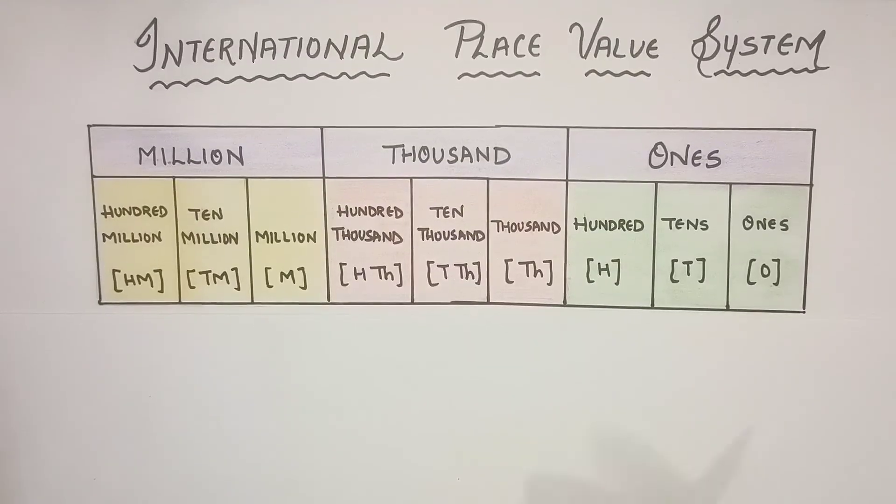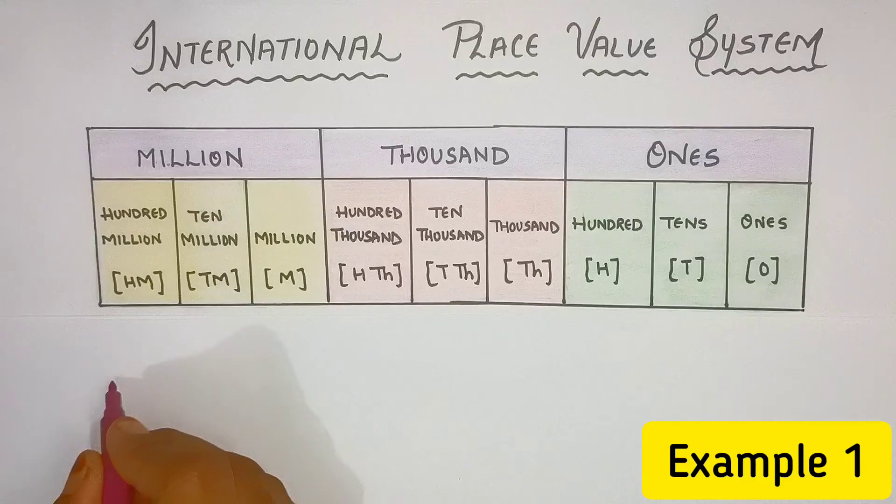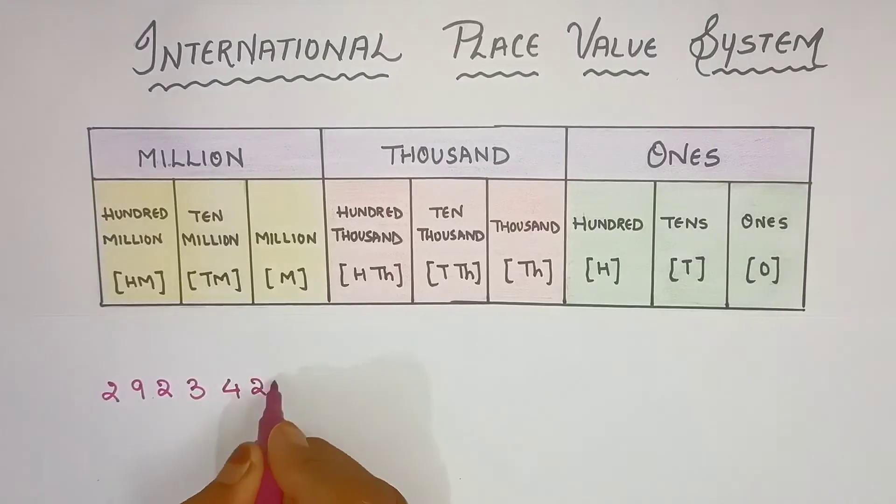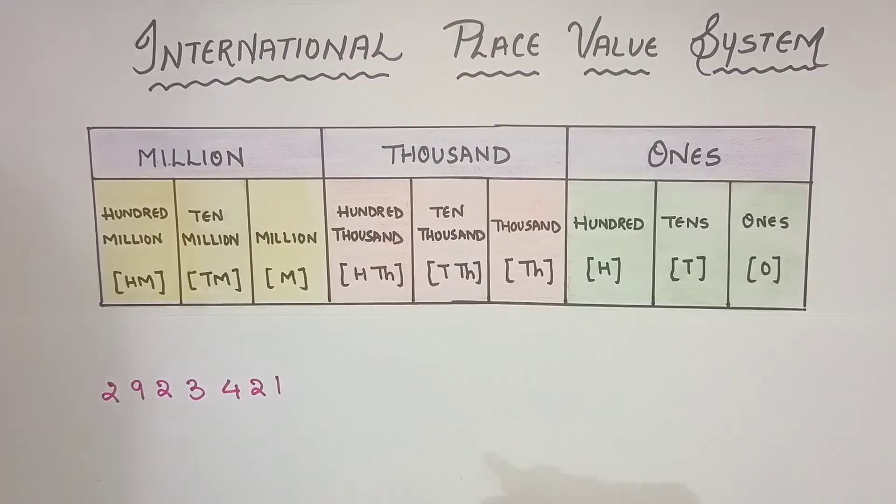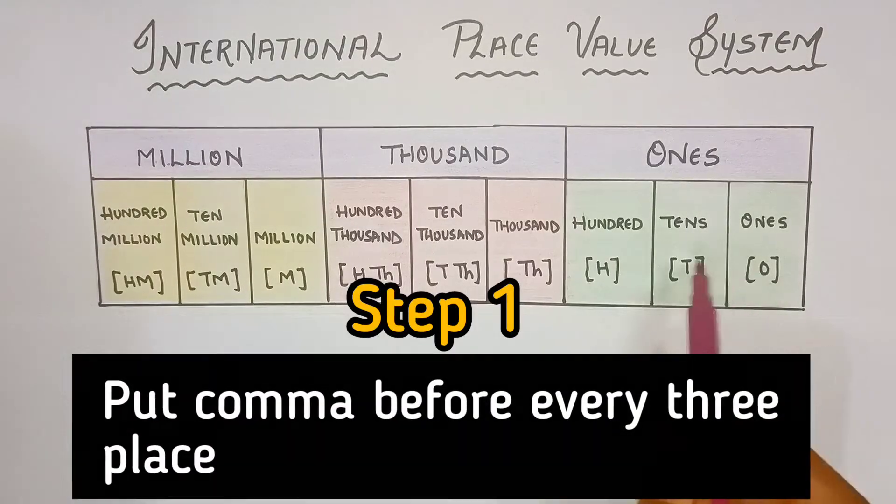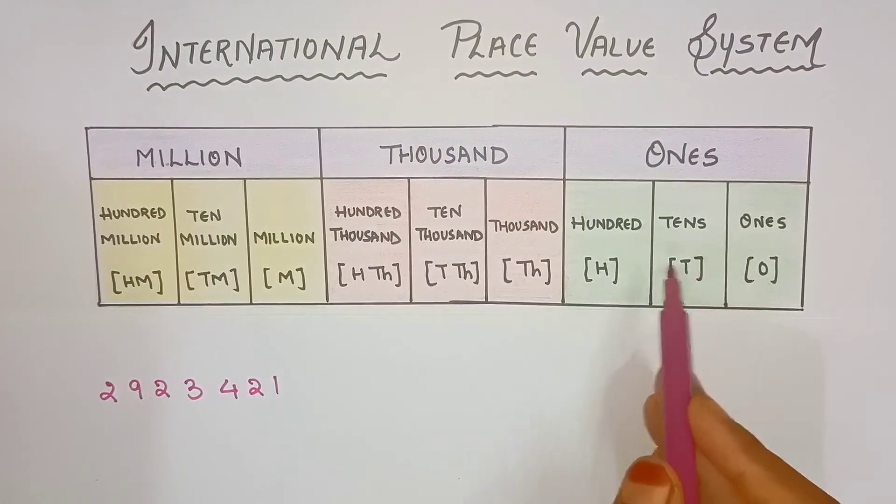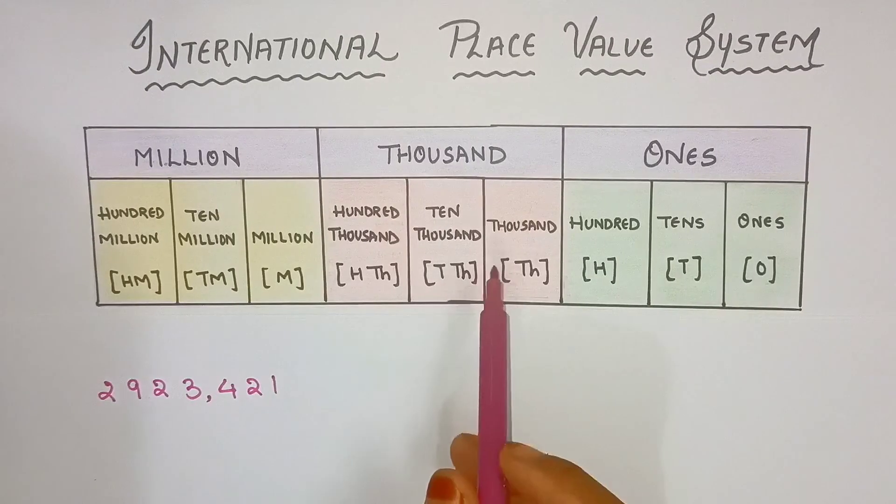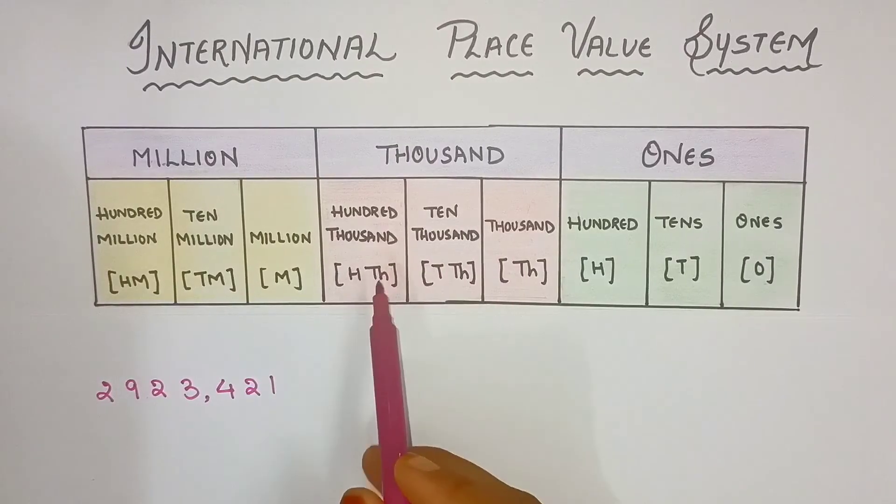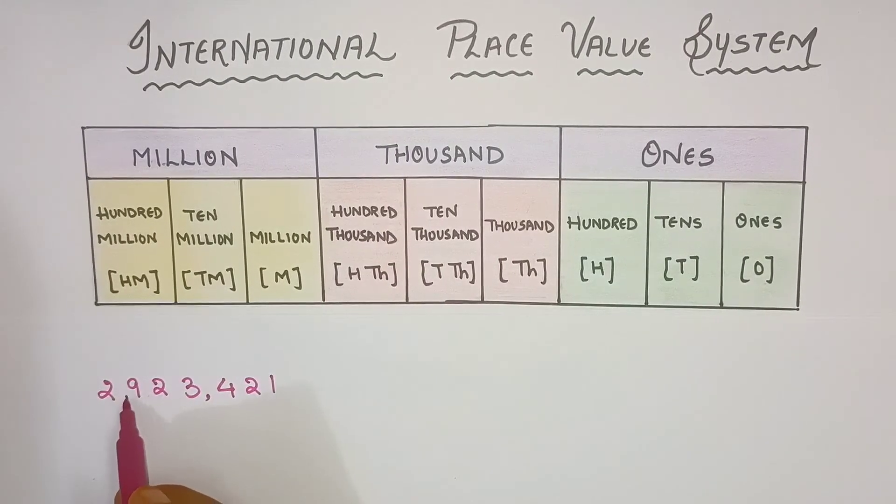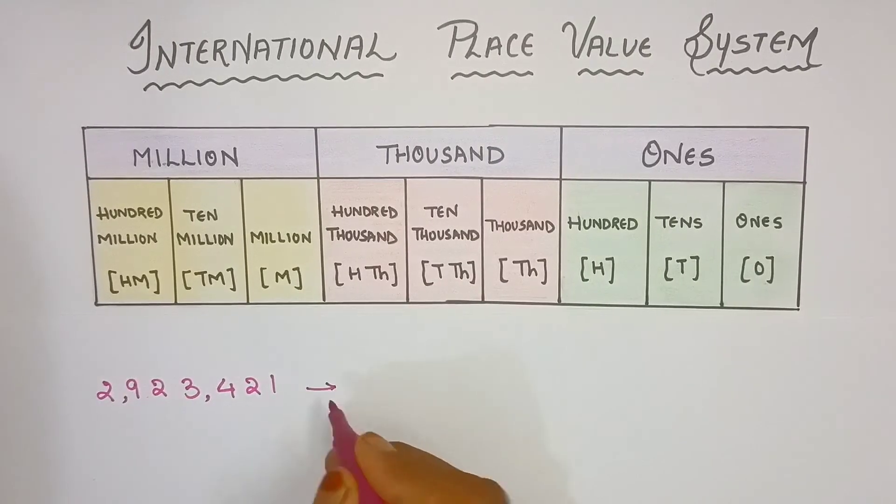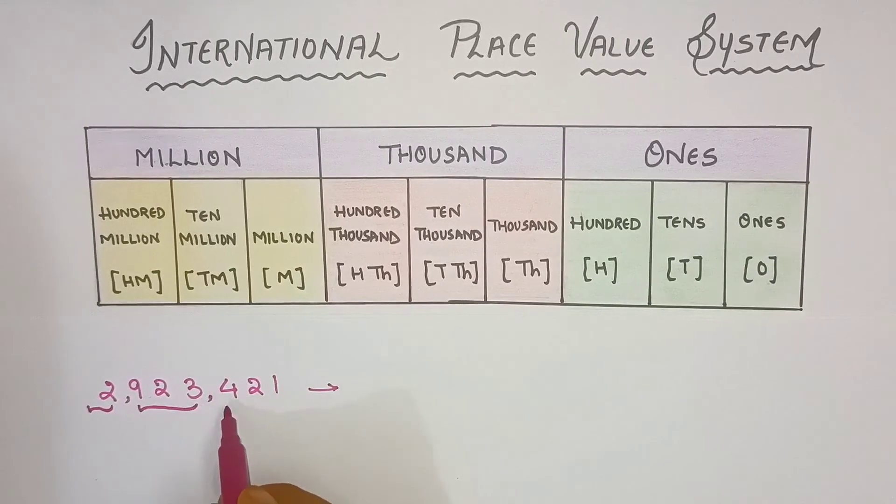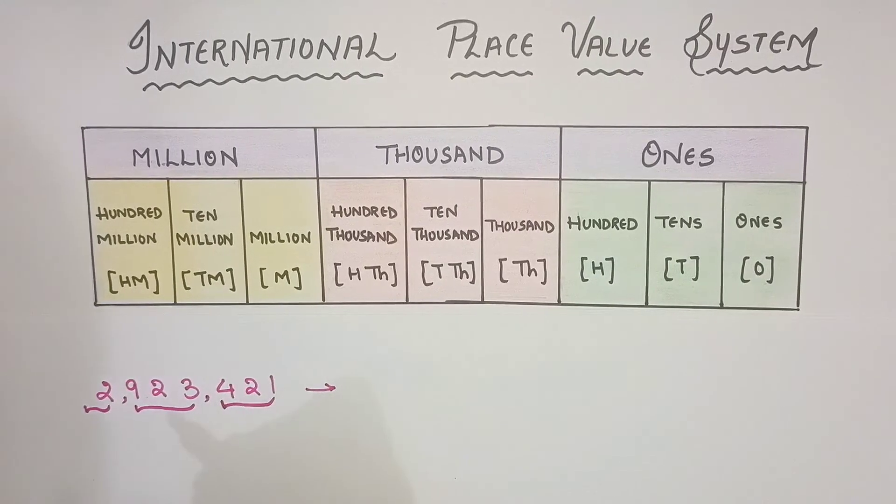Now, let us learn this through examples. Let us take 2, 9, 2, 3, 4, 2, 1. This is a 7-digit number. Now, how do we add here? Ones has 3 places - Ones, Tens, Hundreds. So, we will put a comma before one period. Then again, Thousand, Ten Thousand, Hundred Thousand - again 3 places. So, we will put a comma before 3 places again. Now we will do our grouping. This one is one group, this one is second group, and this one is third group.